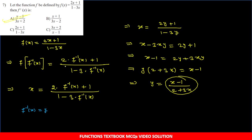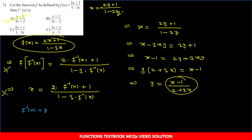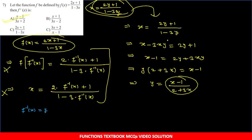Is question ko thoda jaldi karne ke liye: inverse find karne ka shortcut hai - F(x) ki jagah x put karna, aur x ki jagah Y put karna, phir Y ki value find karna. Jo Y ki value aayegi wahi F inverse(x) hoga. Is tarike se pehle ke steps likhne ki zaroorat nahi padti, direct is step par aajate hain.